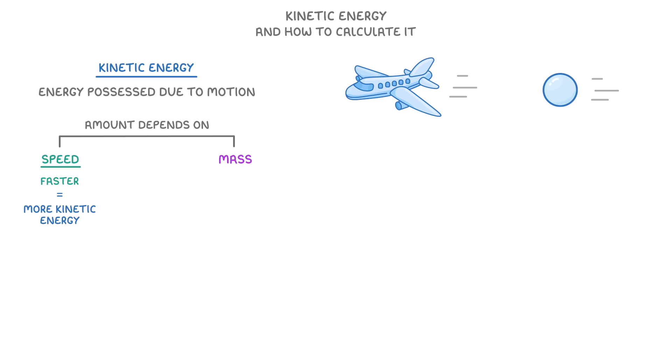Which kind of makes sense, because if you think about any fast moving object, it must have had lots of energy transferred to it in order to speed it up, and that energy is stored in the kinetic energy store. So fast objects have lots of kinetic energy.